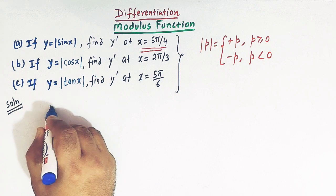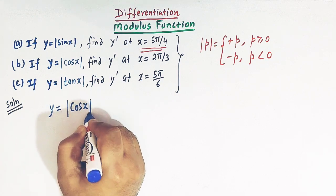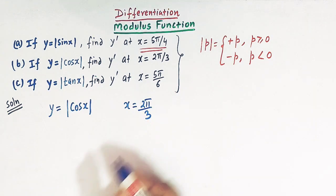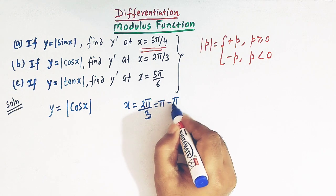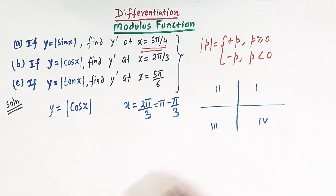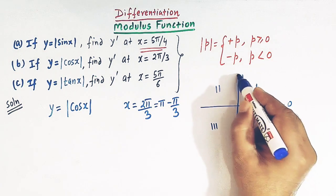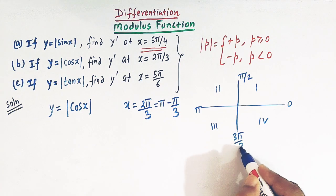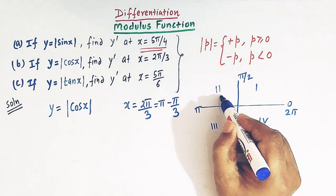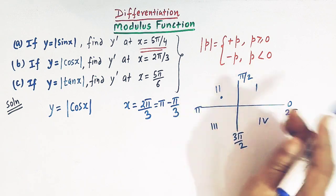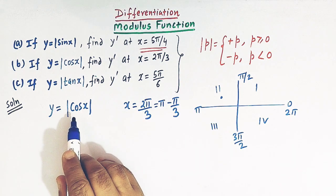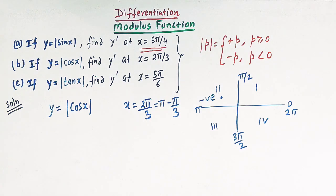Now let us take the second problem. We have y equal to mod of cos x, and we need to find the derivative at x equal to 2π/3. We can write 2π/3 as π minus π/3. Drawing the quadrants with 0, π/2, π, 3π/2, and 2π marked, we can see that x equal to 2π/3 lies in the second quadrant. From trigonometric functions, the cosine function is negative in the second quadrant.